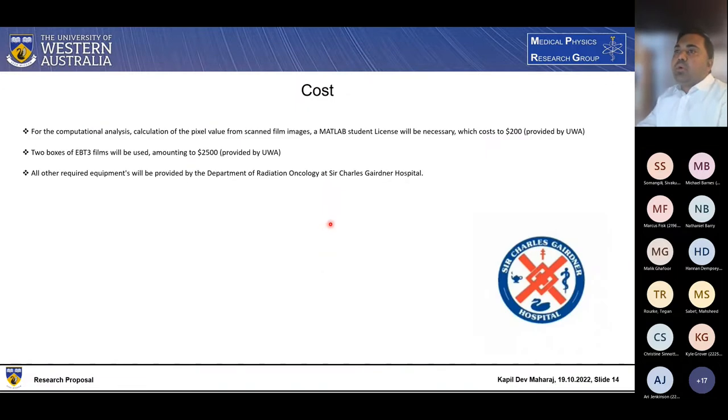So in terms of the cost, I'm going to use the MATLAB for calculating the pixel value from the scanned film images that will amount to around $200, which will be provided by UWA. And even the two boxes of EBT-3 will be used, which amounting to $2500, which also will be provided by UWA. But all of the required equipment will be provided by the Department of Radiation Oncology at Sir Charles Gairdner Hospital. And for that, I'm thankful for the Sir Charles Gairdner Hospital providing me all kinds of equipment.